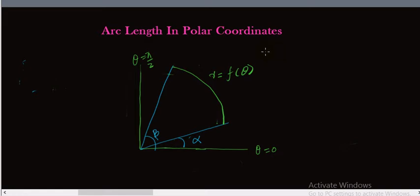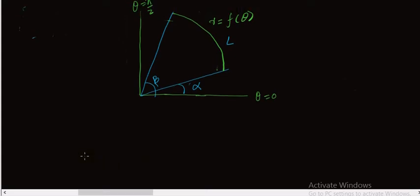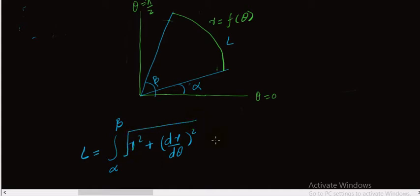Now we discuss arc length in polar coordinates. If we have a polar curve r equal to f of theta, for which theta varies from alpha to beta, in order to find the arc length of the curve from theta equal to alpha to theta equal to beta, we use the relation: L equals the integral from alpha to beta of the square root of r squared plus (dr/dθ)² dθ.